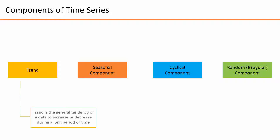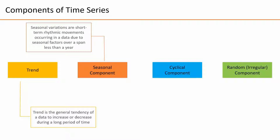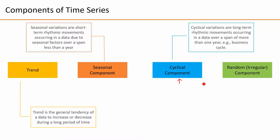A trend is the general tendency of data to increase or decrease during a long period of time. Seasonal variations are short-term rhythmic movements occurring in data due to seasonal factors over a span of less than a year. Some series also have a cyclical component — these are long-term rhythmic movements occurring over a span of more than one year, for example, a business cycle.